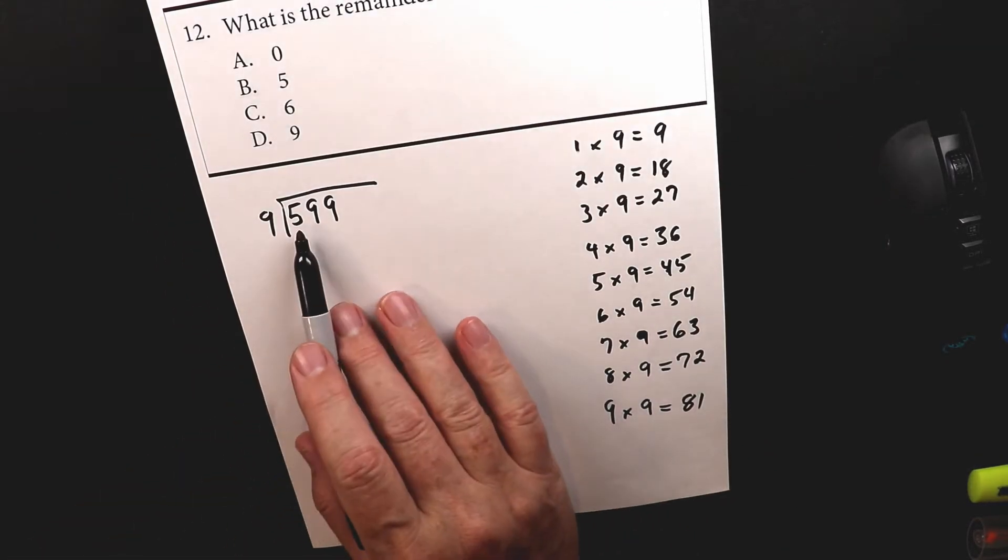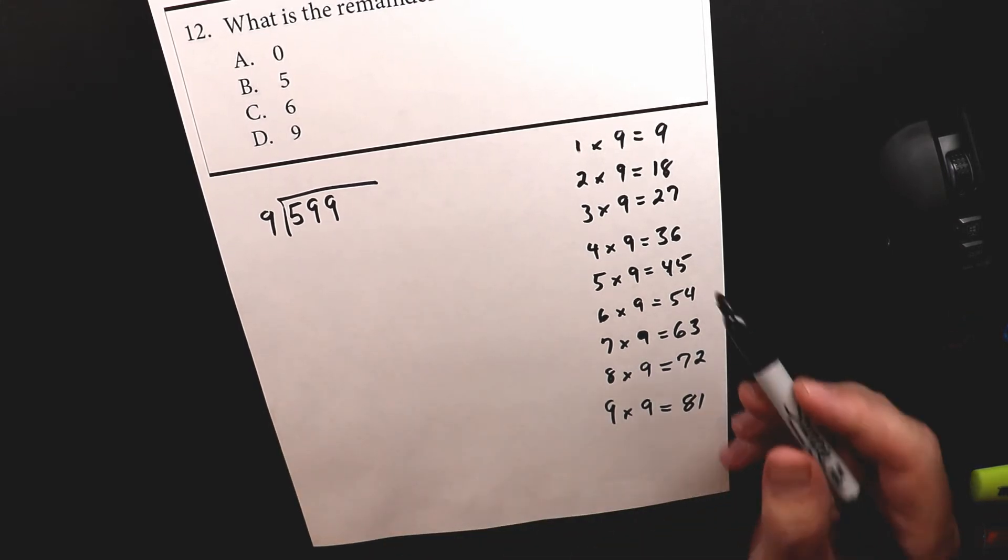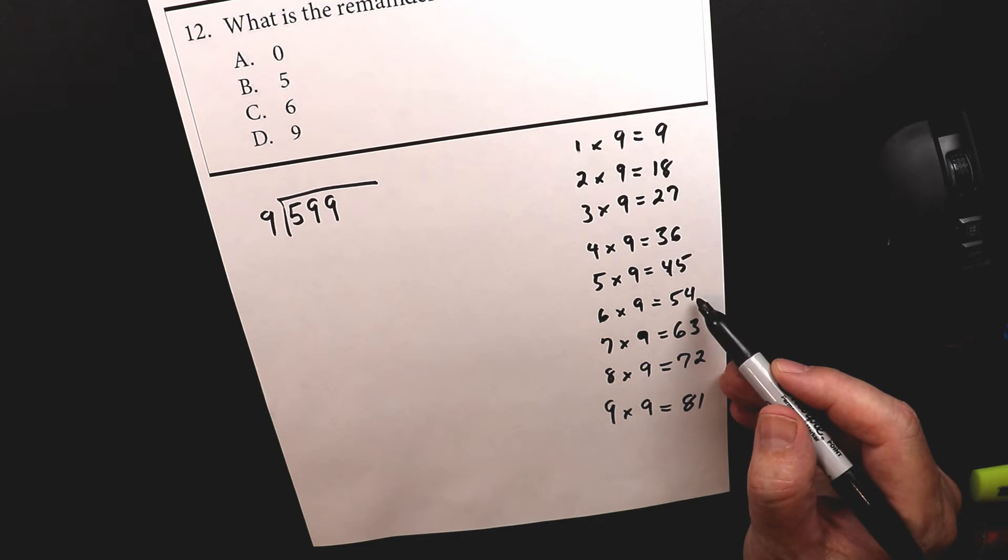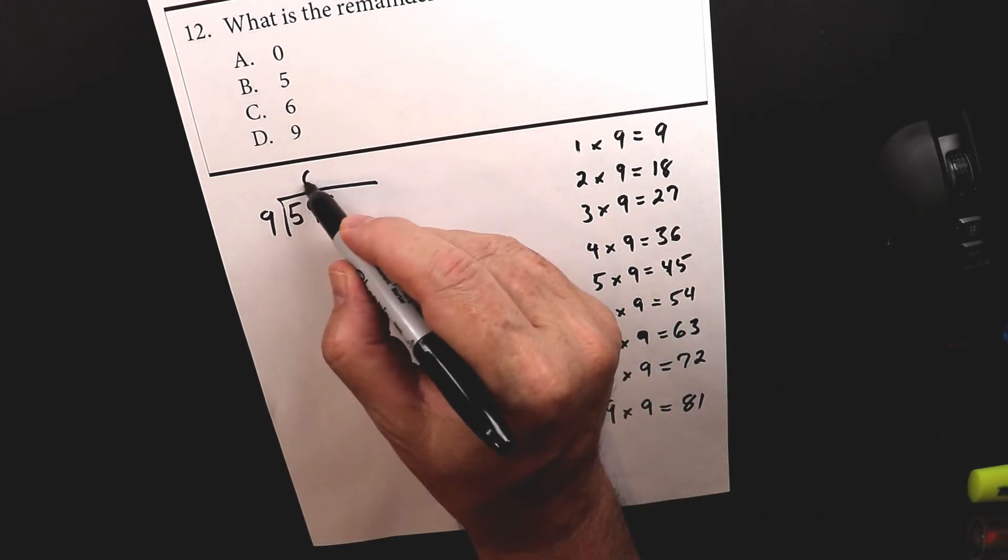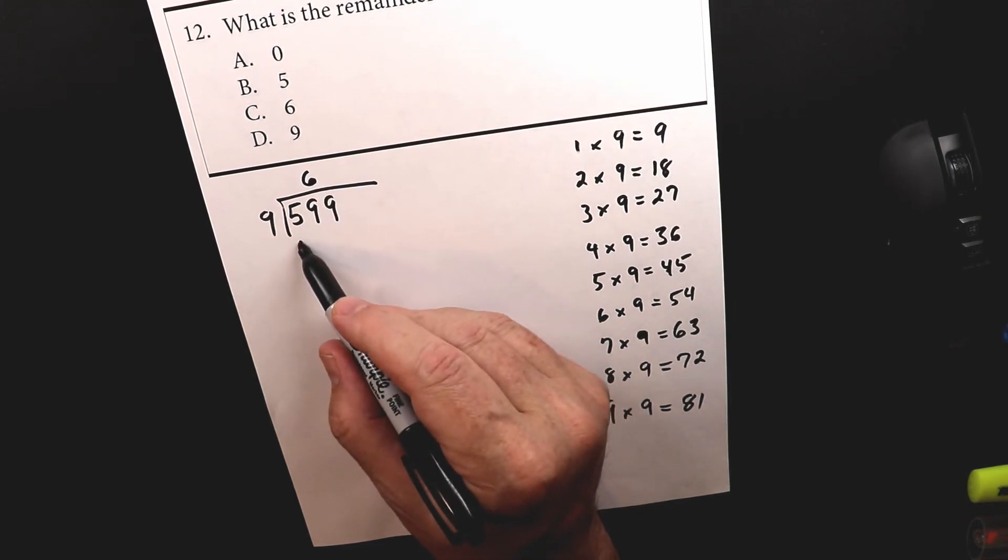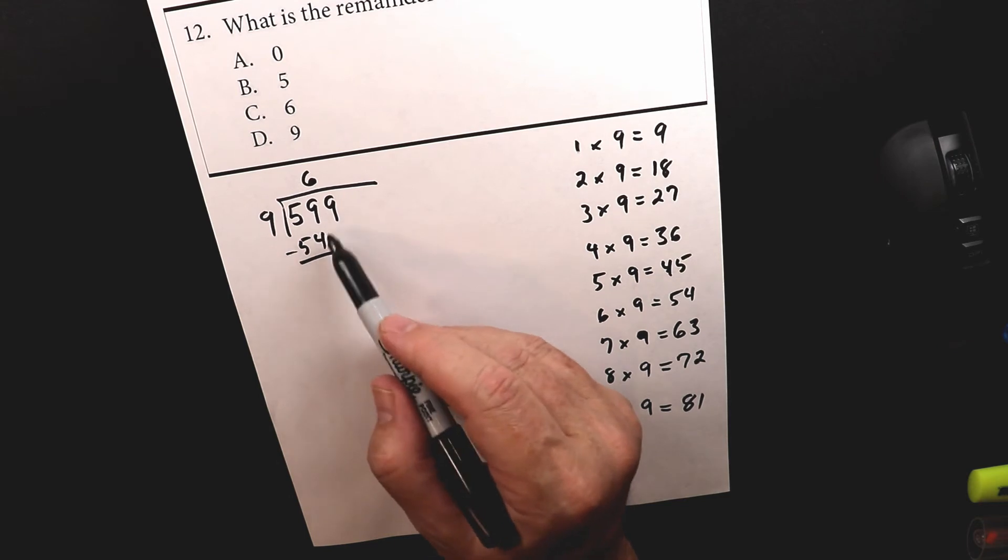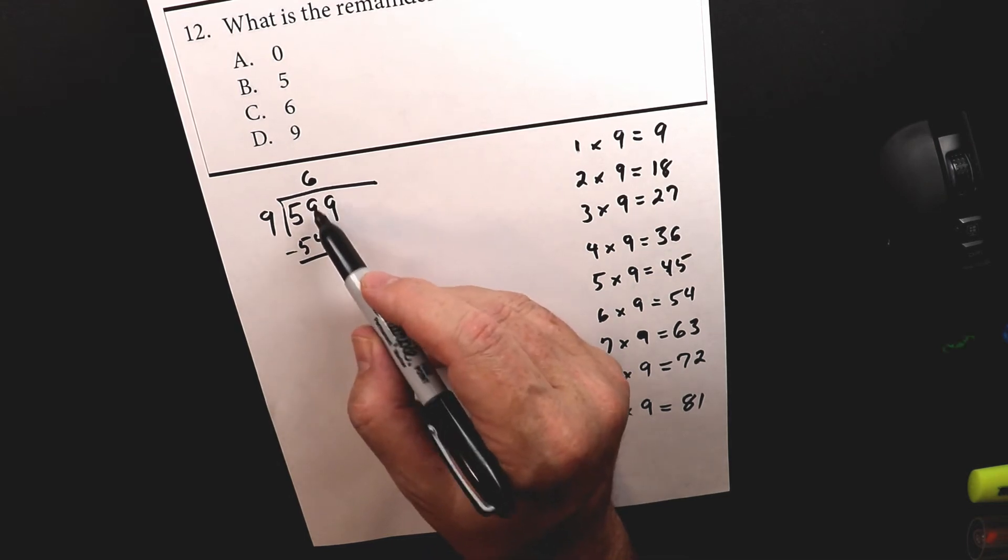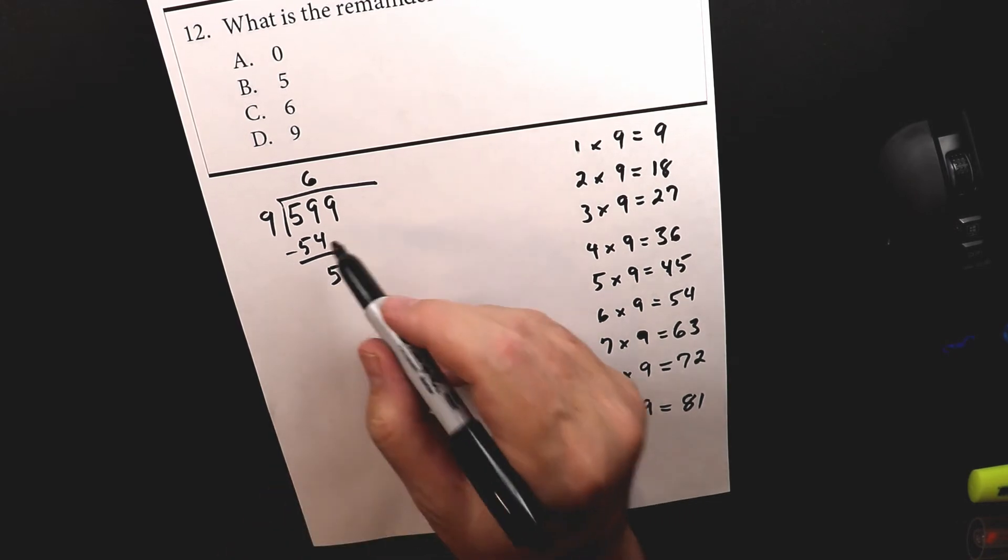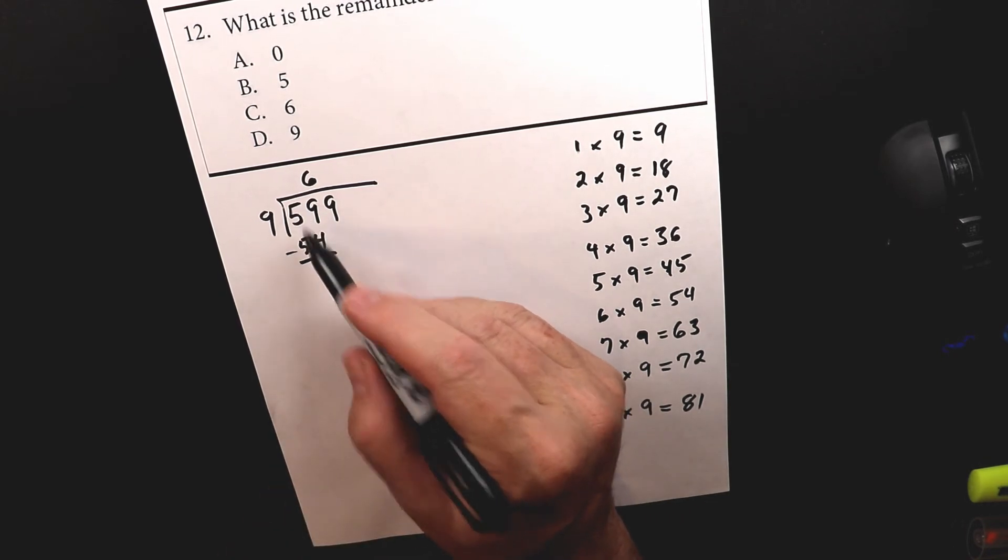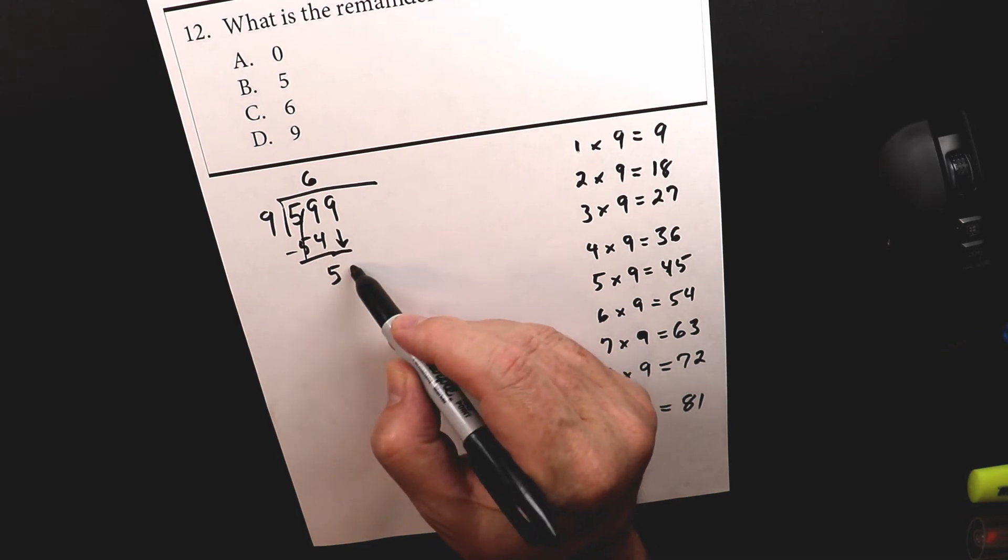So what I want to do is obviously five is smaller than nine, so we go to the next one. So 59. So I look down the list and I say, oh, 54, 63 is too big. So I go back to this one. So it's six. Six times nine is 54. 59 minus 54 is nine minus four is five. And then five, we're done here. So I don't have to worry about that anymore. And then I bring down the nine.